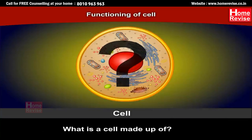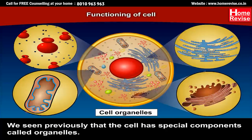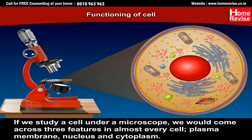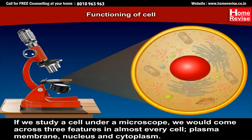Each kind of cell organelle performs a special function. What is a cell made up of? If we study a cell under a microscope, we would come across three features in almost every cell: plasma membrane, nucleus, and cytoplasm.